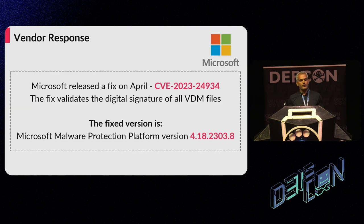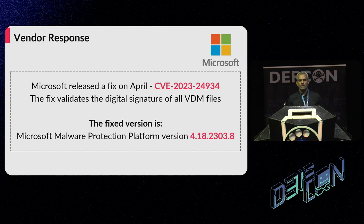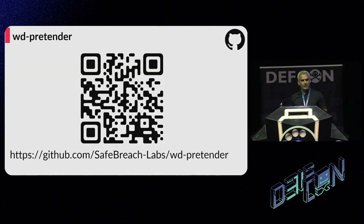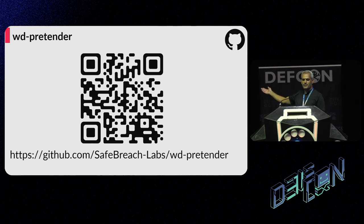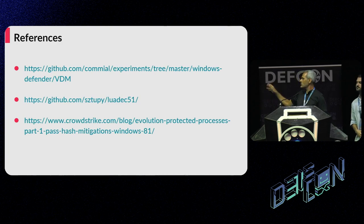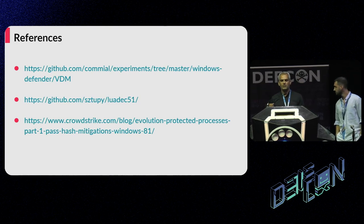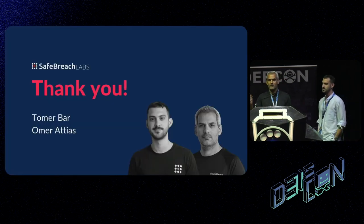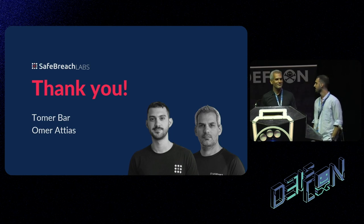We reported to Microsoft, which released a patch and assigned a CVE ID. Please make sure that you are using the updated version of the malware protection platform or above. This is the Windows Defender Pretender GitHub QR code and link. This past research helped us a lot and we built our research based on their initial findings — thank you, and thank you all for joining us.